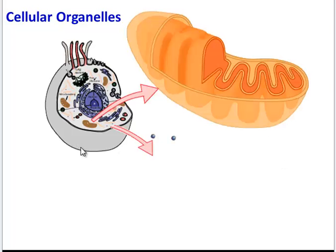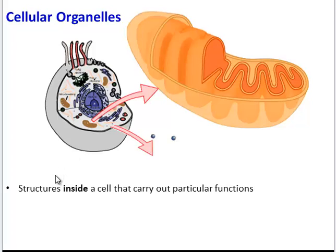Here is a cell, and within this cell are smaller structures called organelles, and those organelles perform certain jobs. Now, some of these organelles, such as this mitochondria, have their own membrane, and are said to be membrane-bound.